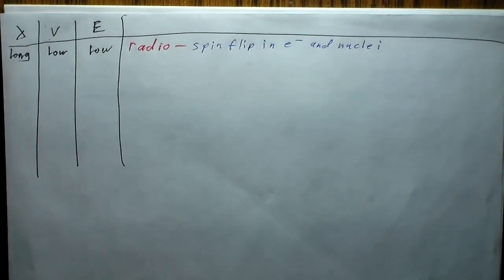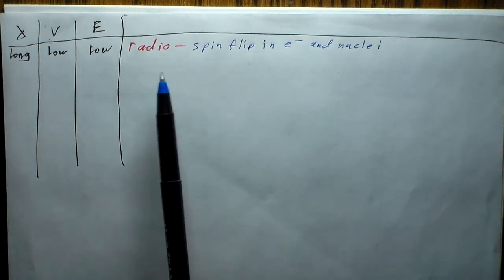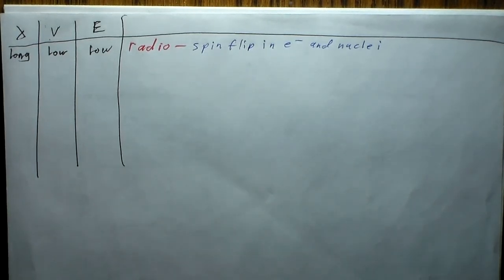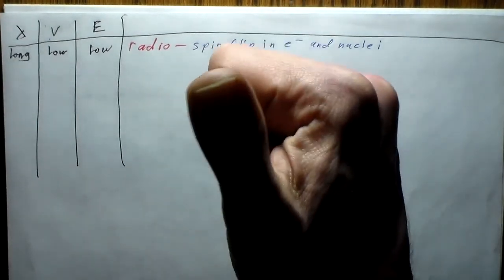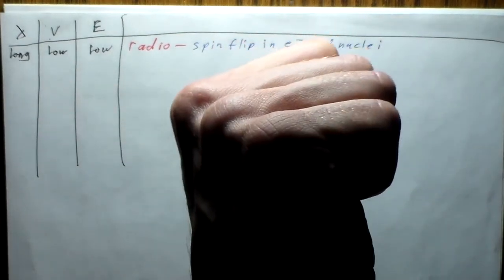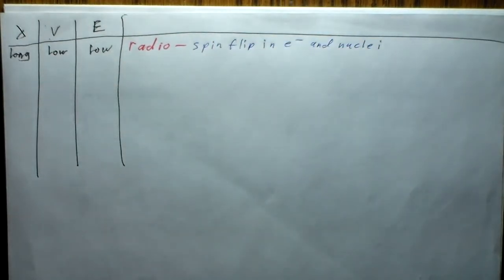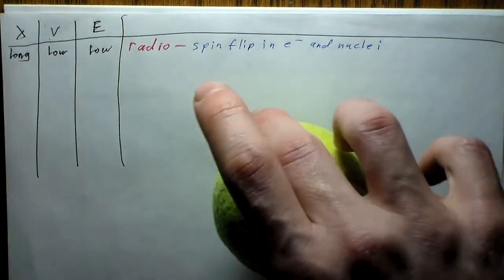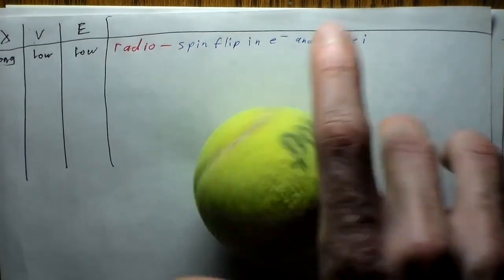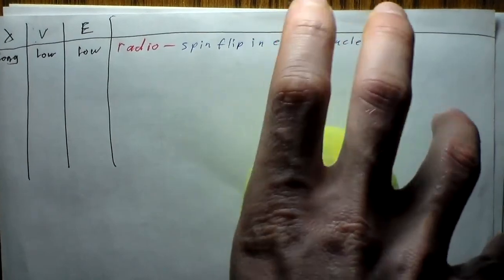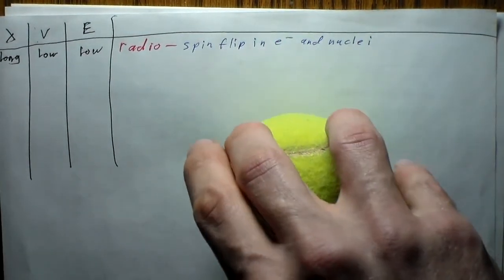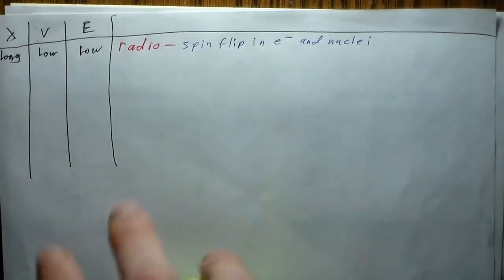When we get to the quantum mechanics chapter, we'll talk about the quantum mechanical property called spin. Radio waves can cause the spin to flip in an electron or a nucleus such as a proton — basically going from spin up to spin down. If you think of a rotating ball spinning one way, flipping the spin means it now goes the opposite direction.